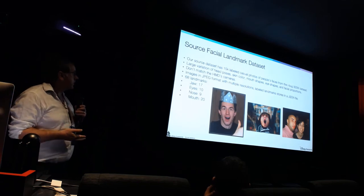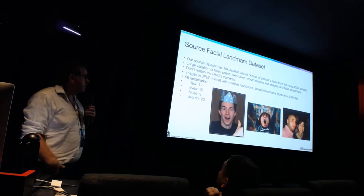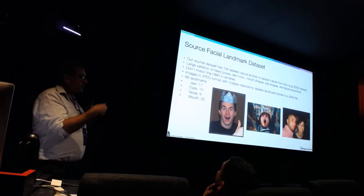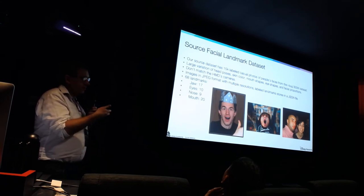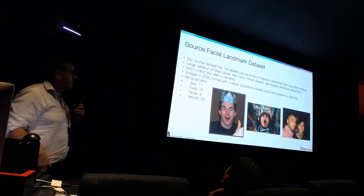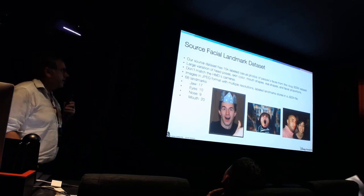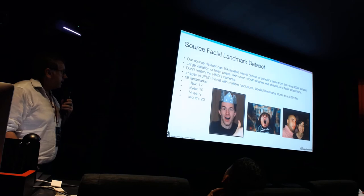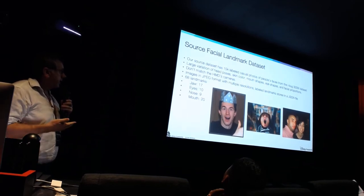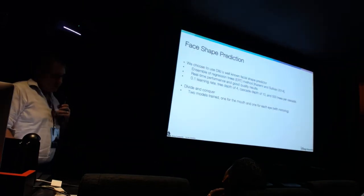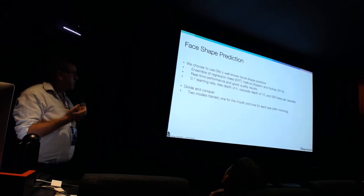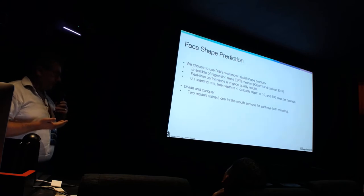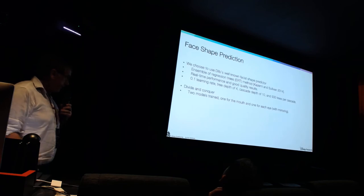Our source dataset of choice was the iBug 300W dataset — 15,000 labelled casual photos. Because we're Disney, we paid for a licensed version composed of creative commons photos so we're not infringing any licenses. The academic community can obviously use the 300W dataset without such restrictions. This gave us a broad dataset, but as I say it doesn't match the HMD cameras. The solver we chose is the well-known DLib cascade regression trees method, which gave us real-time performance with reasonably good quality.